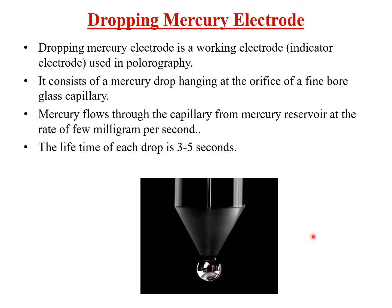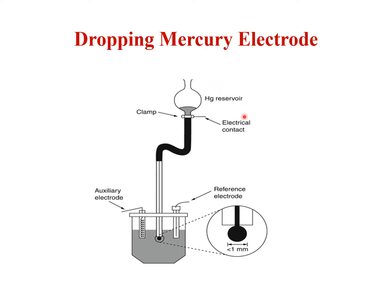Now we will see the construction and working of a dropping mercury electrode. There is a mercury reservoir connected to flexible tubing, which is then connected to a glass capillary. A mercury drop is formed at the orifice of this capillary at around three to five second intervals. The electrode is dipped in an analyte solution whose concentration is to be found, along with a reference electrode and an auxiliary electrode.